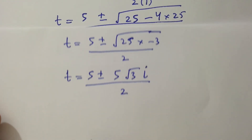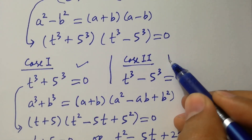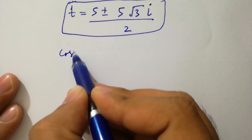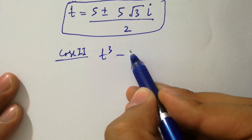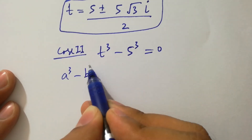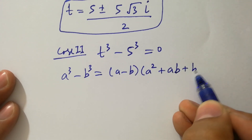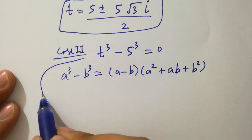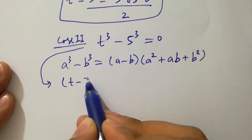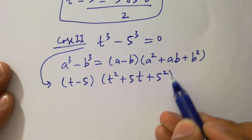Now taking Case 2: t cubed minus 5 cubed equals 0. We know the formula of a cubed minus b cubed, which equals a minus b times a squared plus ab plus b squared. Applying it, we get t minus 5, times t squared plus 5t plus 25, equal to 0.